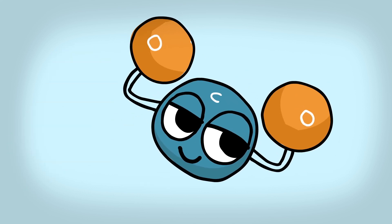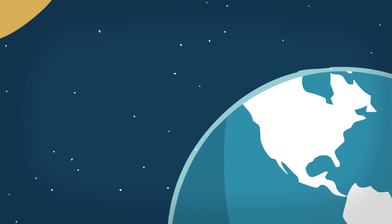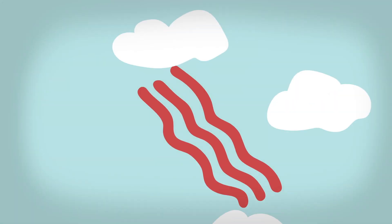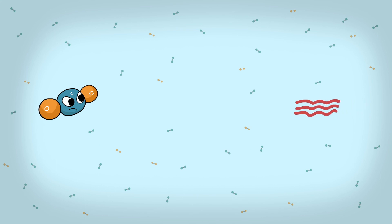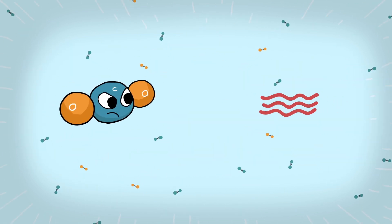As our planet gets warmed by the Sun, heat is released from the earth's surface and tries to escape into space. But the greenhouse gases are like, not so fast buddy. Instead of letting the heat pass through, they trap it and send some of it back to earth.